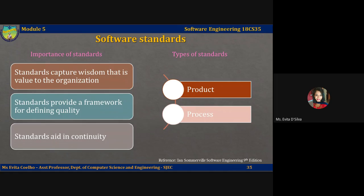Secondly, process standards. These define the processes that should be followed during software development. They should encapsulate good development practice, and process standards may include definition of specification, design, and validation processes, process support tools, and description of the documents that should be written.